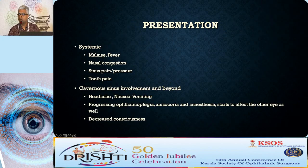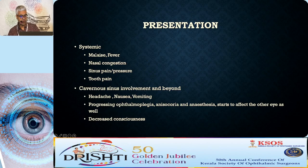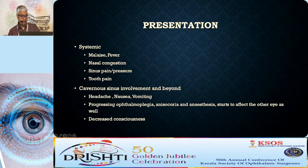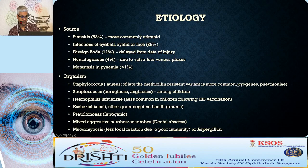Systemic presentation includes malaise, fever, nasal congestion, tooth pain. Cavernous sinus involvement presents with headache, nausea, vomiting, progressive ophthalmoplegia, and ipsilateral anesthesia. The other eye may start to get affected, initially showing a sixth nerve palsy, and the patient may progress to decreased consciousness.